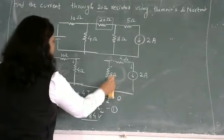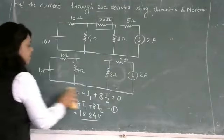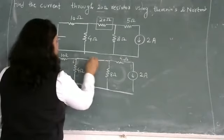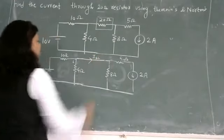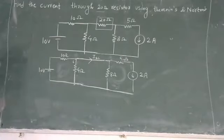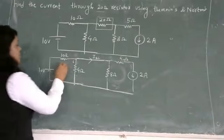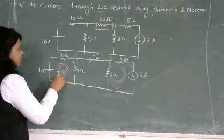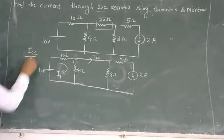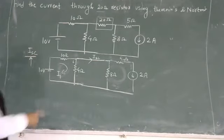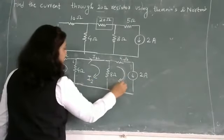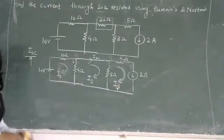If you have VTH, then you can use Norton. You can use ISC if you use Norton. So I have ISC, and the third thing is i1, i2, i3.